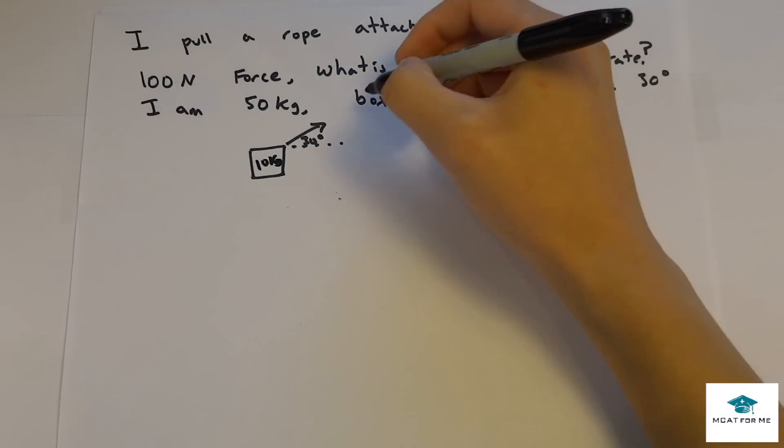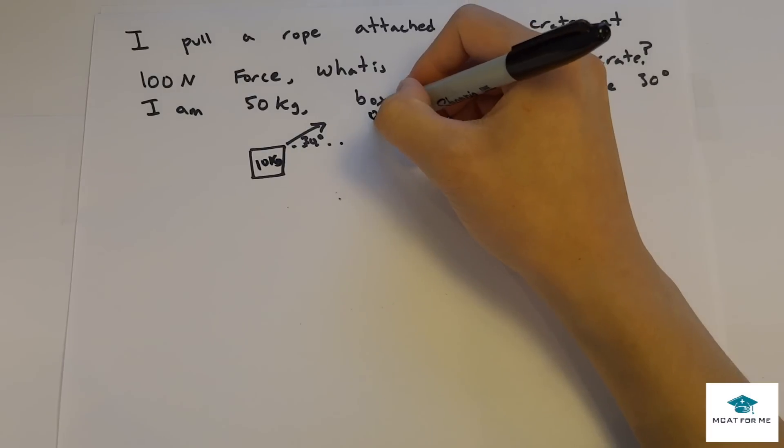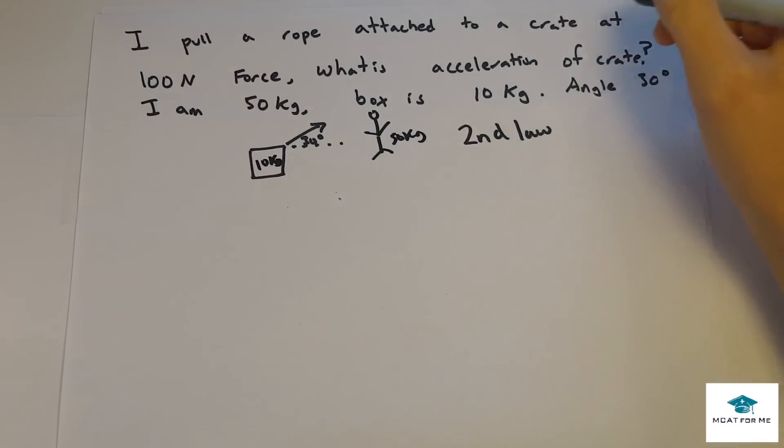So we know this is 10 kilograms and we know the man who's pulling is 50 kilograms. So we got this man right here and he's 50 kilograms. And the angle that you're pulling this rope at is at 30 degrees.